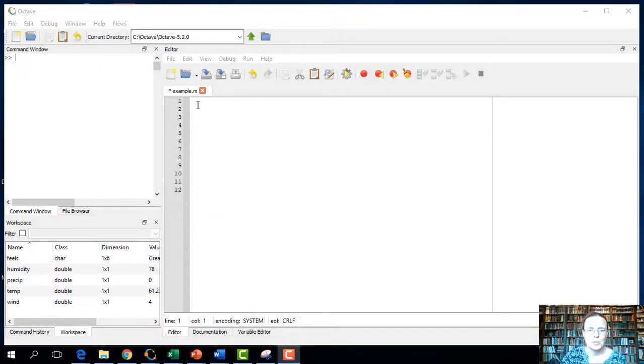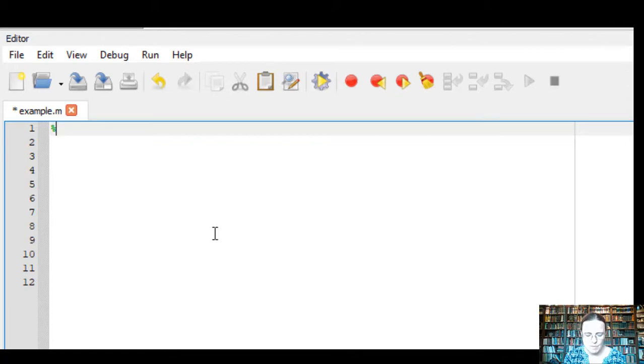For this next bit, I thought we would use the editor to do a few simple engineering calculations. I'm going to start this off here with a comment line. Comments start with a percent symbol or a hashtag. So I'm going to call this engineering constants.